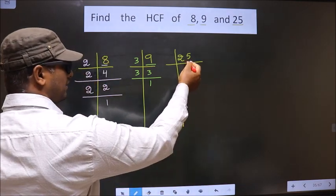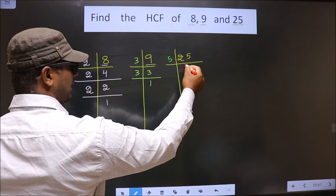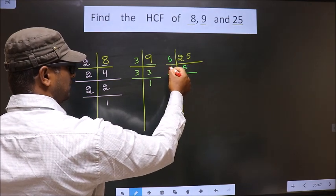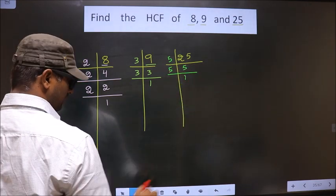Here we have 25. 25 is nothing but 5 times 5. Now, 5 is a prime number, so we take 5 and 1.